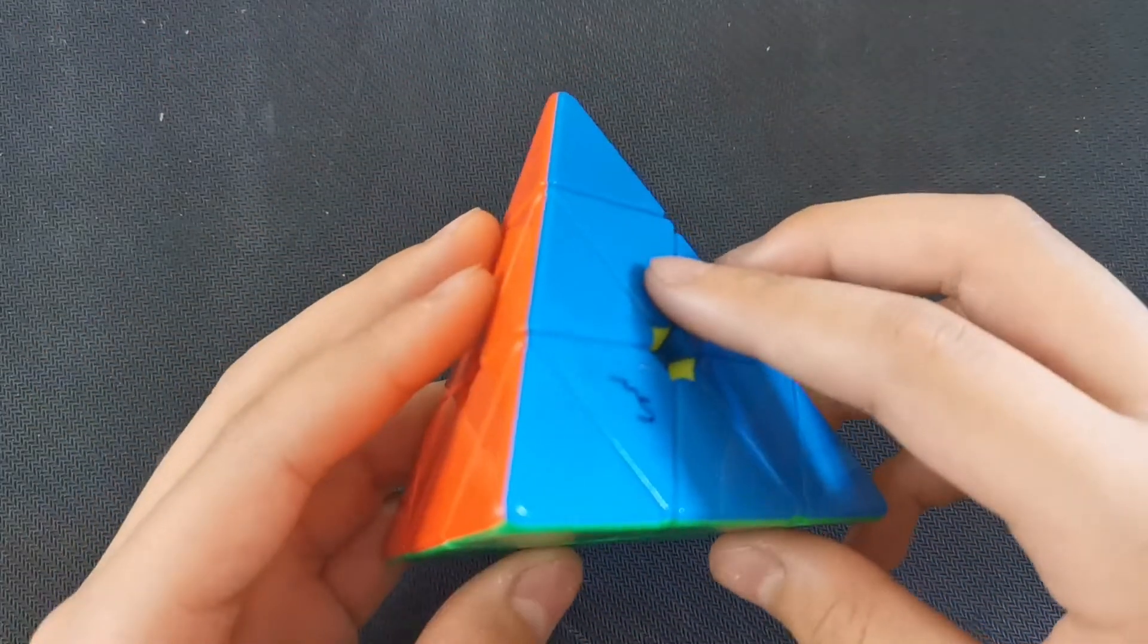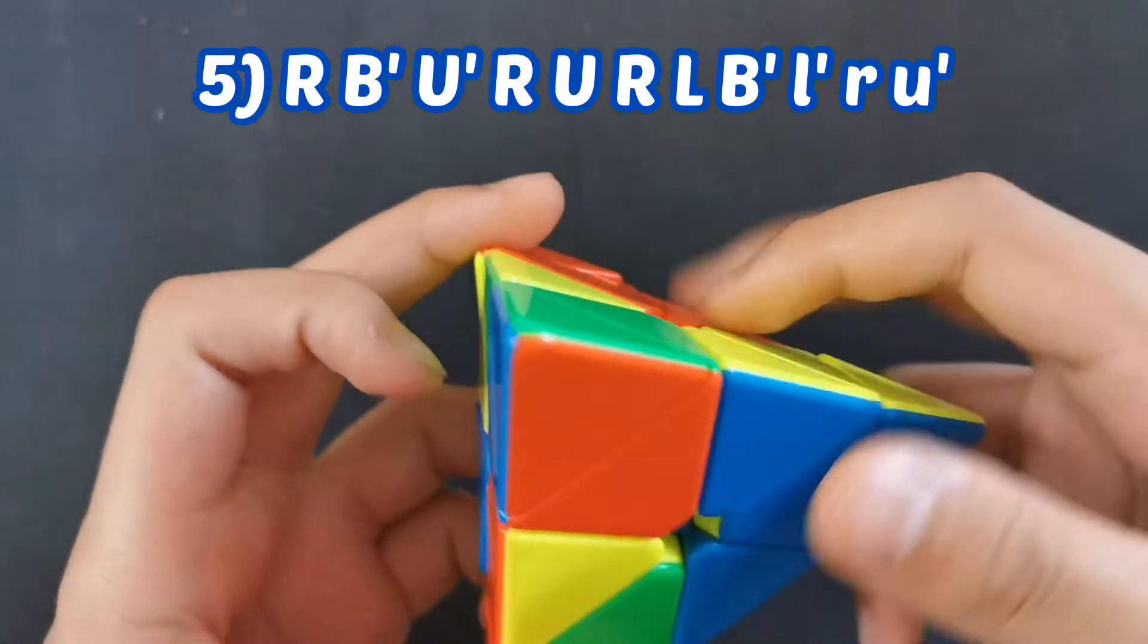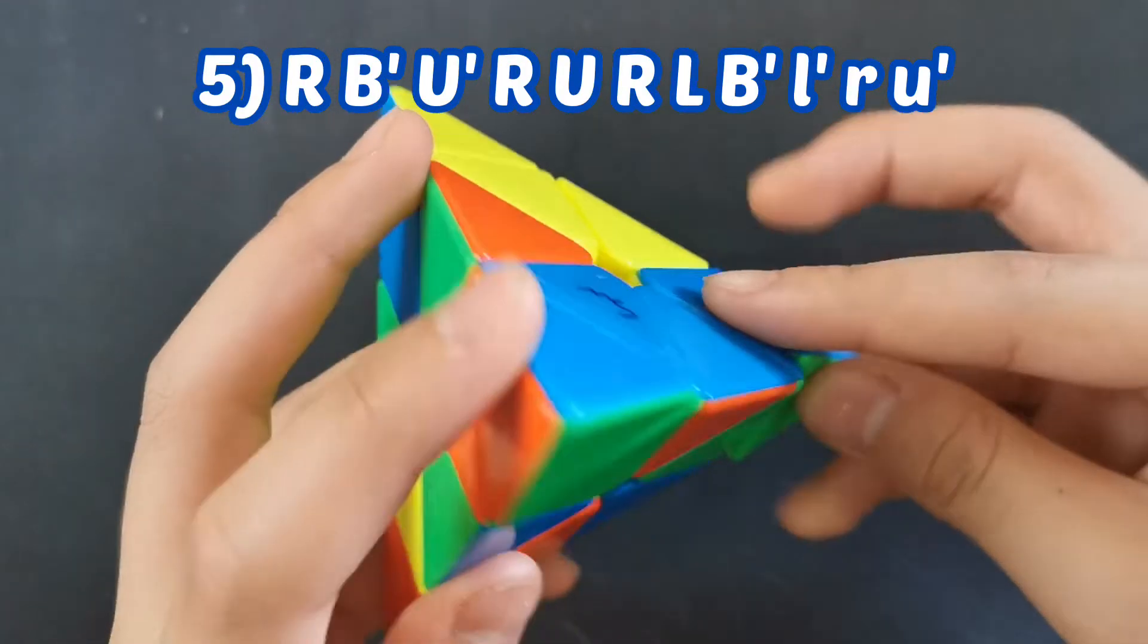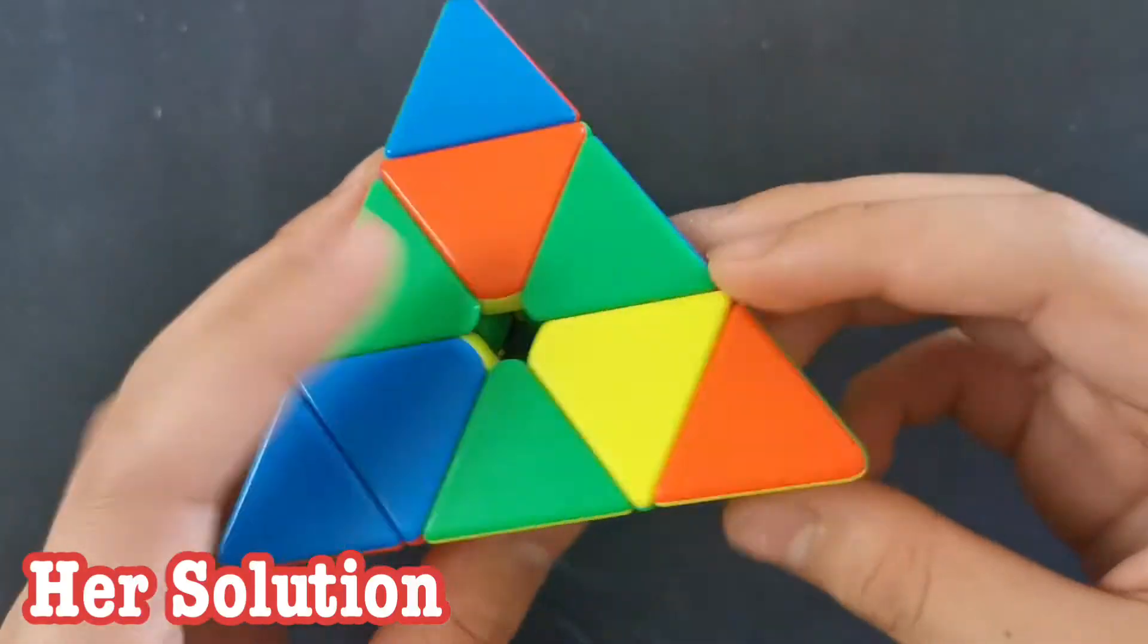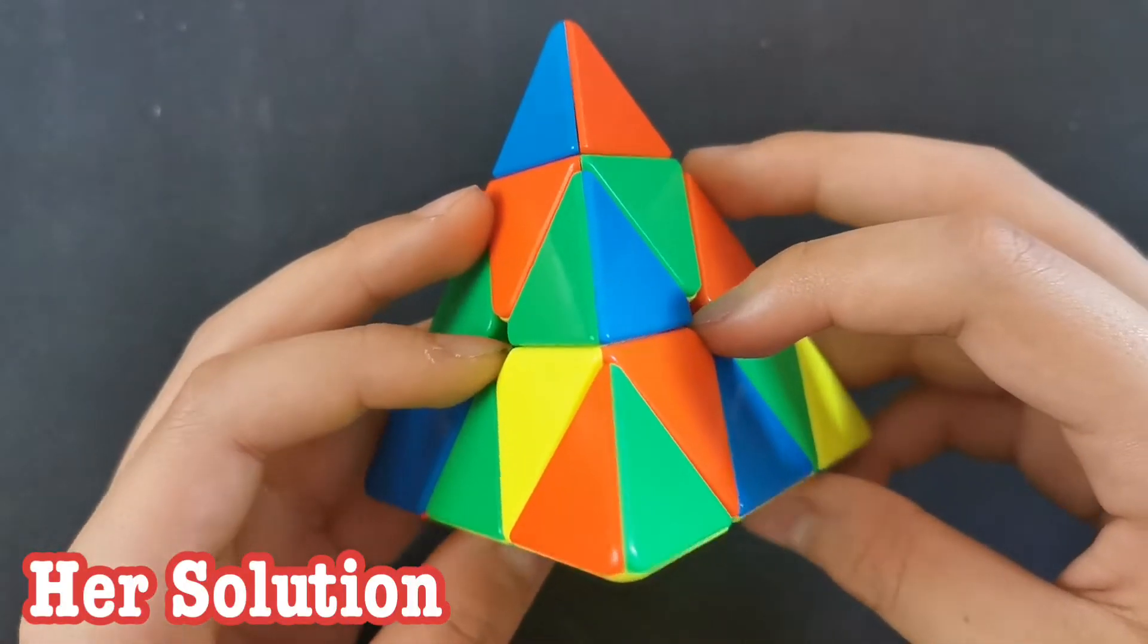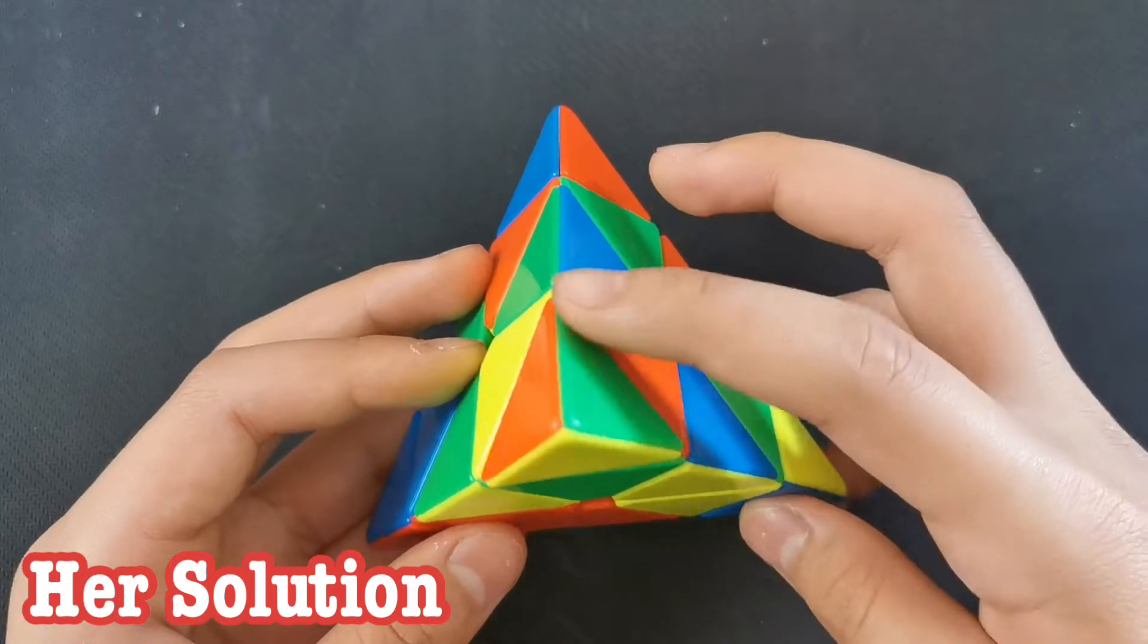The last solve, a 3.76. Okay, so in this scramble you did yellow V and you solved it like this.